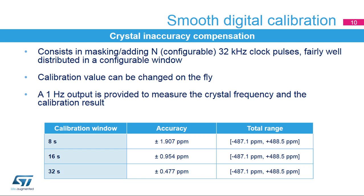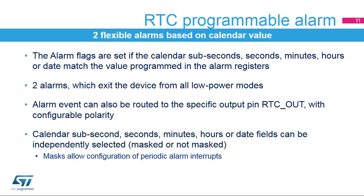In order to reach the precision of the calibration window, the measurement window must be a multiple of the calibration window. The RTC embeds two flexible alarms based on comparison with the calendar value. The alarm flags are set if the calendar subseconds, seconds, minutes, hours, or date match the value programmed in the alarm registers.